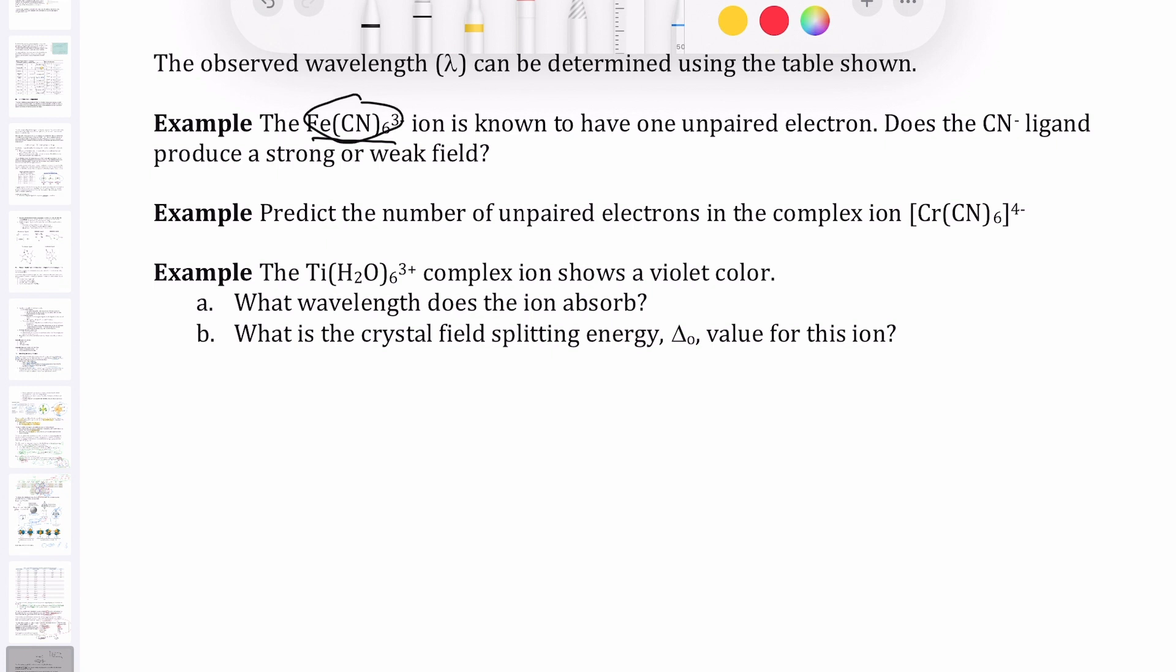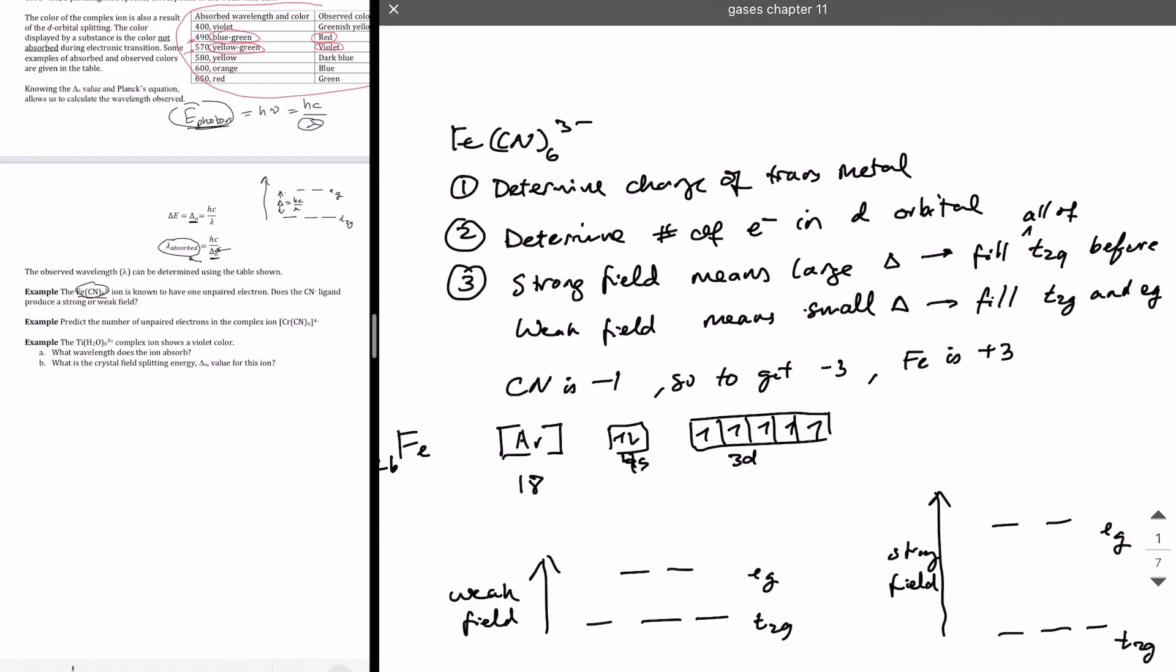So you have to take this species and break it down into a ligand and a transition metal ion. I'm going to do that here on the right. We need to do several steps. One is you need to figure out the charge of the transition metal ion. We know that each of this ligand, CN, is minus one. So if we get a three minus in total, that means our iron must be a plus three.